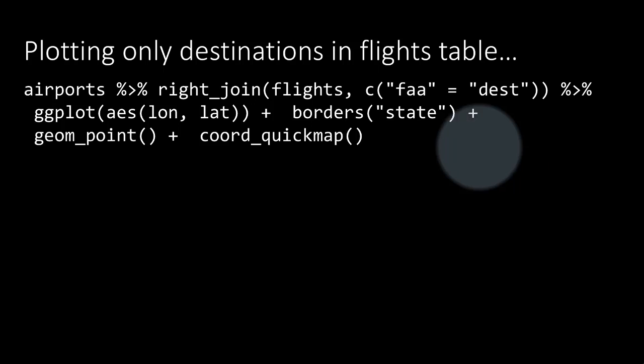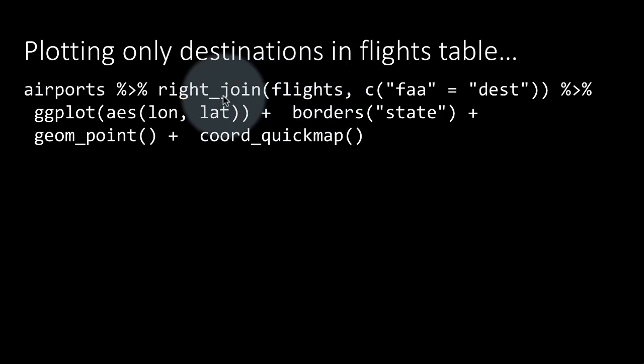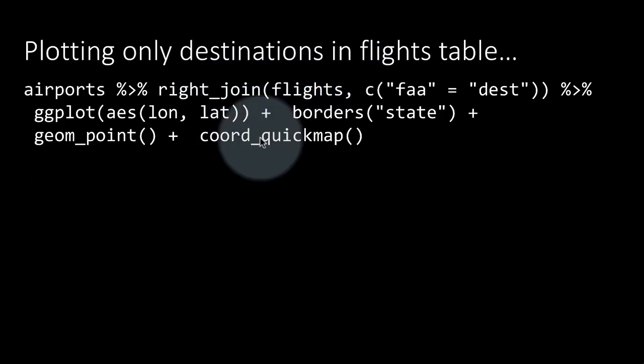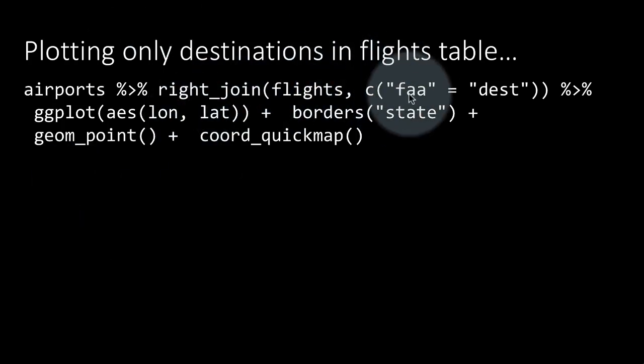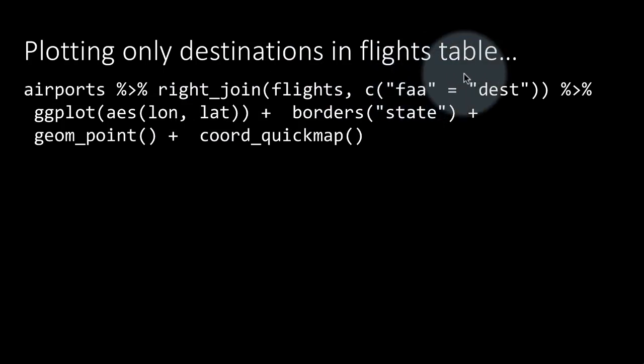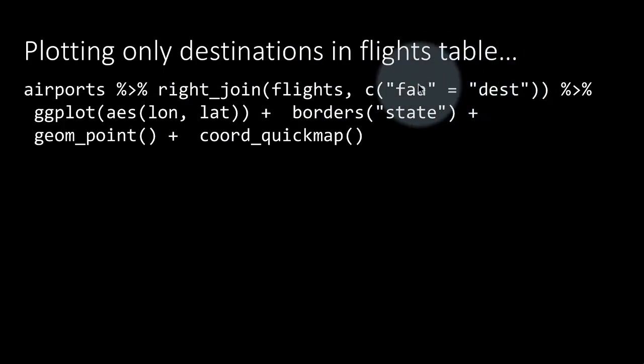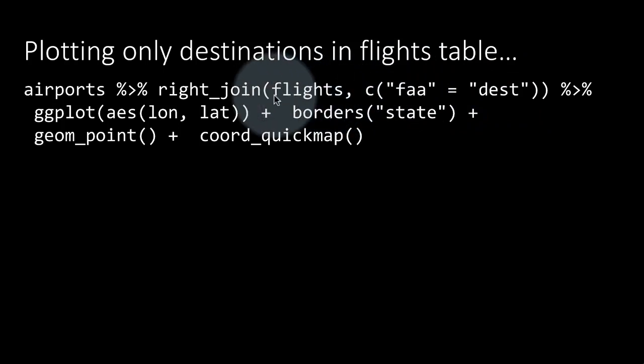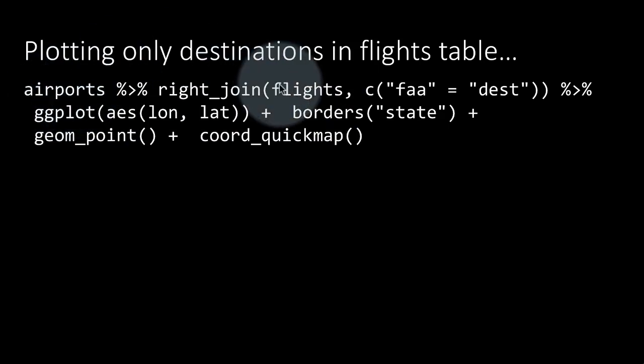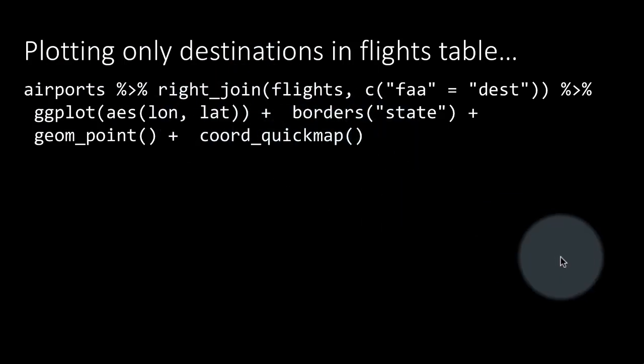And to do that, we might do something like this. Airports, right_join flights. We could have just said inner_join flights. It doesn't matter, right? Because essentially what we are trying to do is to eliminate airports that don't occur in the flights table. So that's why I said right_join. We could have said inner_join. And then we are matching by faa equals dest, because we want to consider only those destination airports which are in the flights table. That is, filter the airports to contain only those that are destinations in the flights table. And we are doing the usual plot.